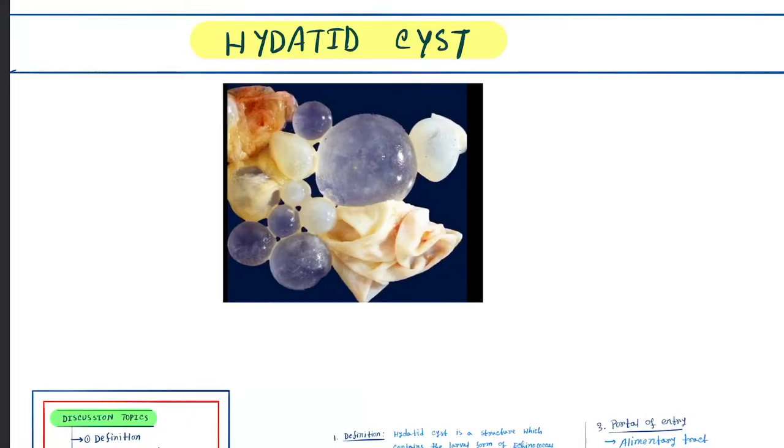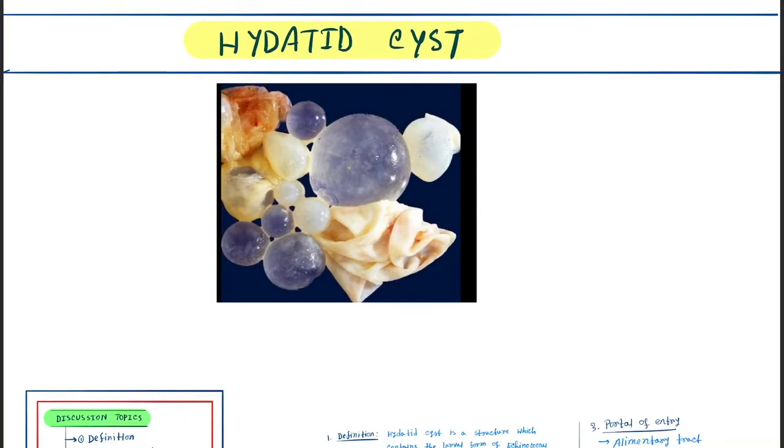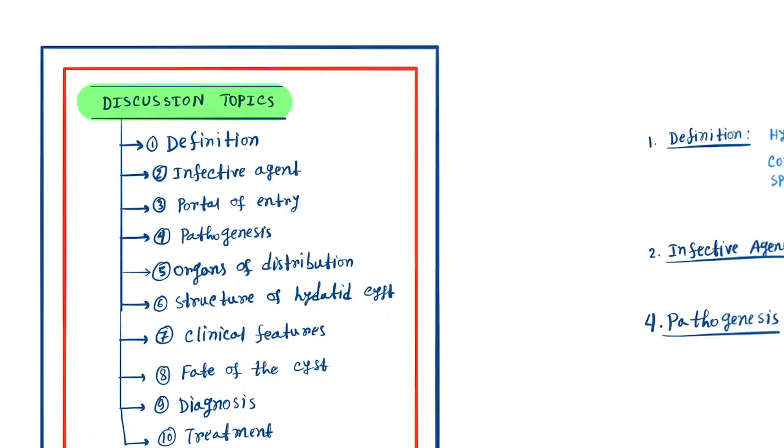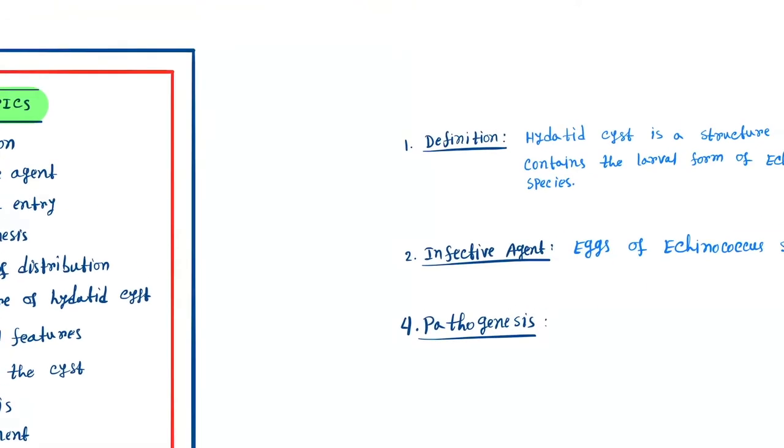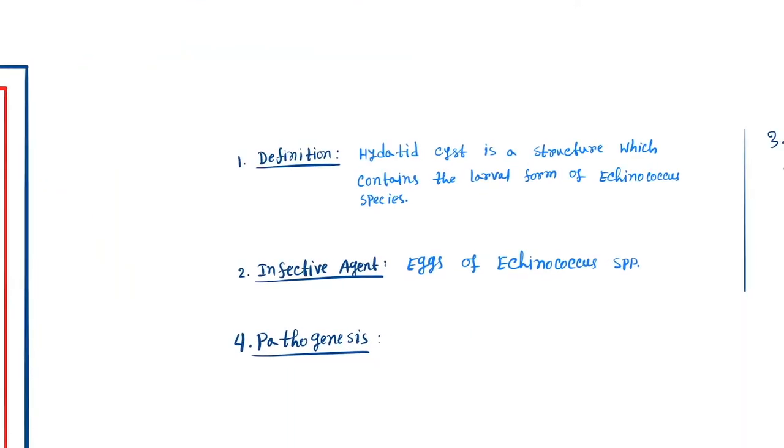Today our topic is the hydatid cyst. In this lecture we will discuss 10 topics about hydatid cyst: definition, infective agent, portal of entry, pathogenesis, organs of distribution, structure of hydatid cyst, clinical features, fate of the cyst, diagnosis, and treatment. First, start with the definition. Definition of hydatid cyst is a structure which contains the larval form of Echinococcus species.